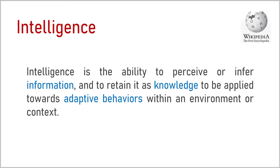In order to study artificial intelligence, we need first to precise the meaning of the term intelligence, which is not simple. Many different definitions have been proposed by researchers. Wikipedia defines intelligence as the ability to perceive or infer information and to retain it as knowledge to be applied towards adaptive behaviors within an environment or context. We can remark that intelligence includes the capacities to extract and store information as knowledge, and to use it to optimize actions or behaviors in a particular context.